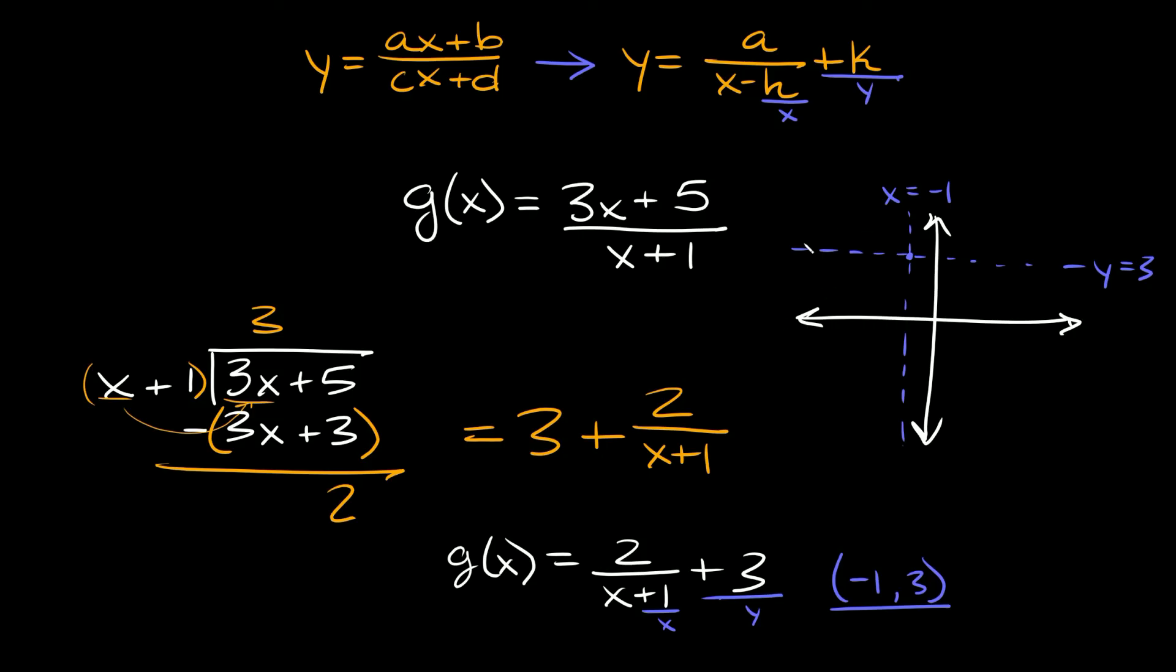And then to graph it you just want to pick a few points to the left side of your vertical asymptote and a few points to the right. And you would plug those into this equation right here.